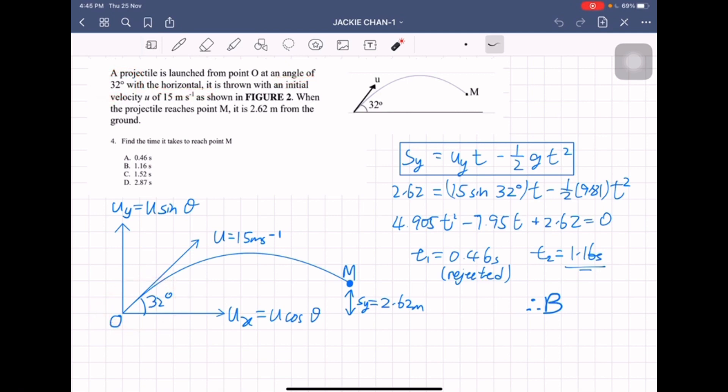Then the initial velocity u equals 15, so we write here u equals 15. The third information is point M from ground is 2.62 meters, so we write here sy equals 2.62 meters.